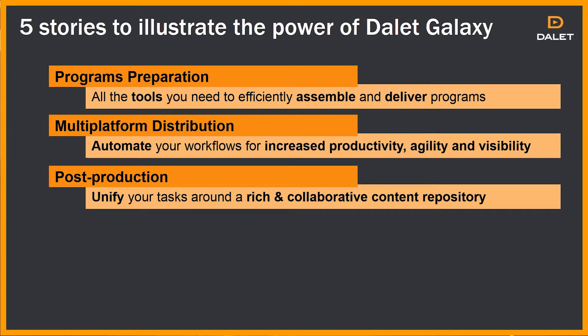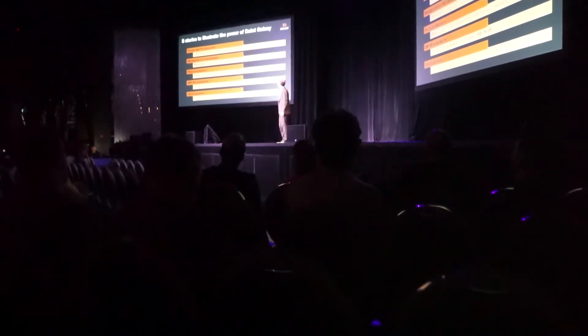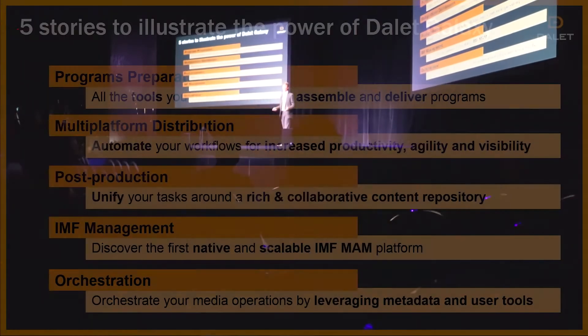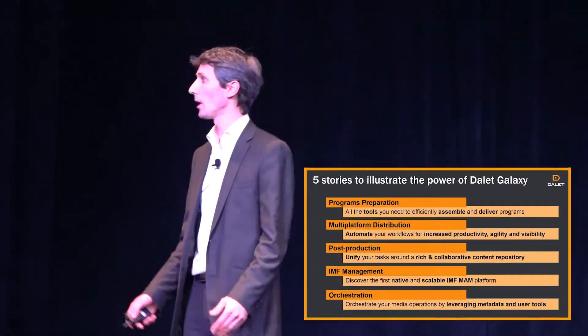Then we'll move to post-production, where we'll focus on how you can unify and build an environment combining creative tools that usually do not work together, but which share the same content because they sit on top of a rich and collaborative content repository. Then we'll move to IMF. I think you know Game of Thrones, so I would like to say that IMF is coming — and if you are not ready for IMF, you might have issues managing thousands of IMF packages without an abstraction layer and a MAM able to support a bigger and bigger archive of IMF content. Finally, I'll spend some time on orchestration, which is a key focus for Dalet and something we've seen leveraged extensively in the last 20 MAM projects we've delivered.